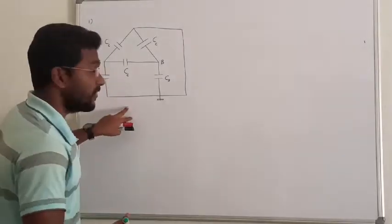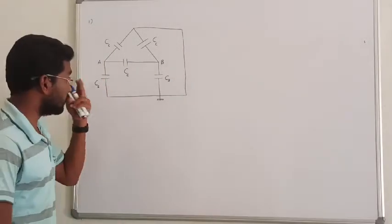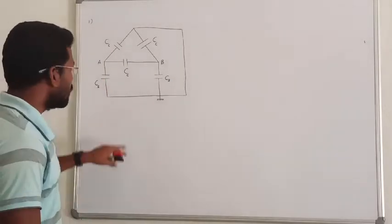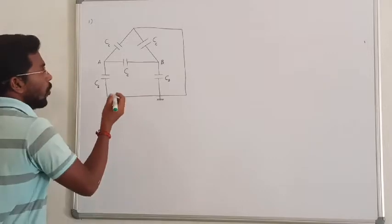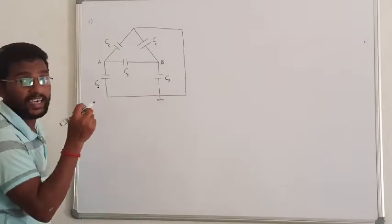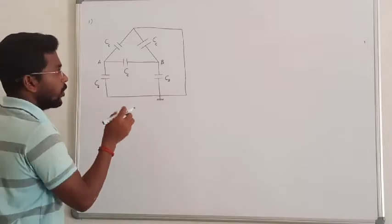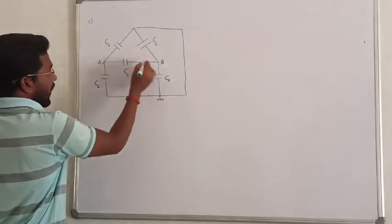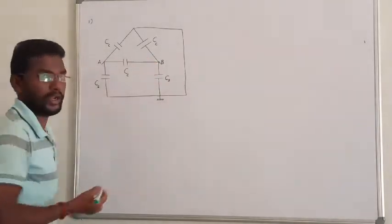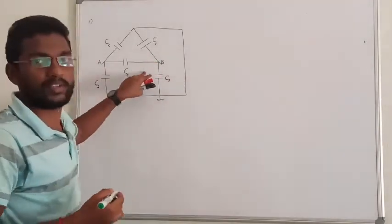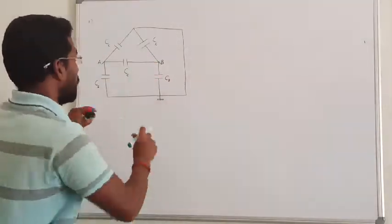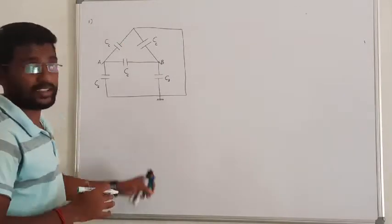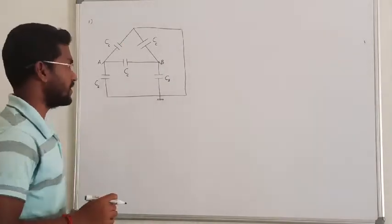Let us see the first question from basic network analysis. The question is: what is C equivalent? That is the total capacitance offered by the network between A and B. It is actually a very simple question. Let us see.